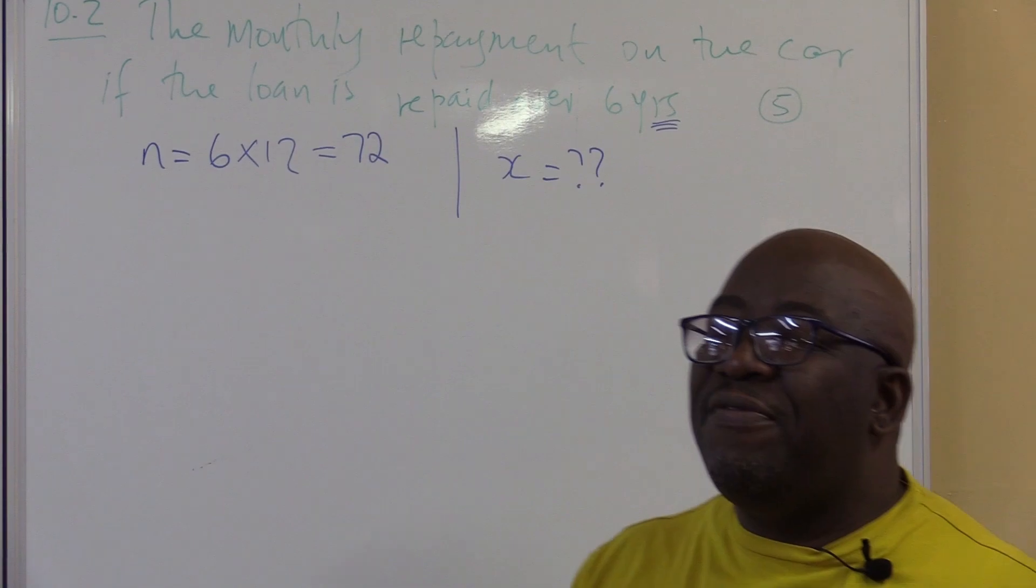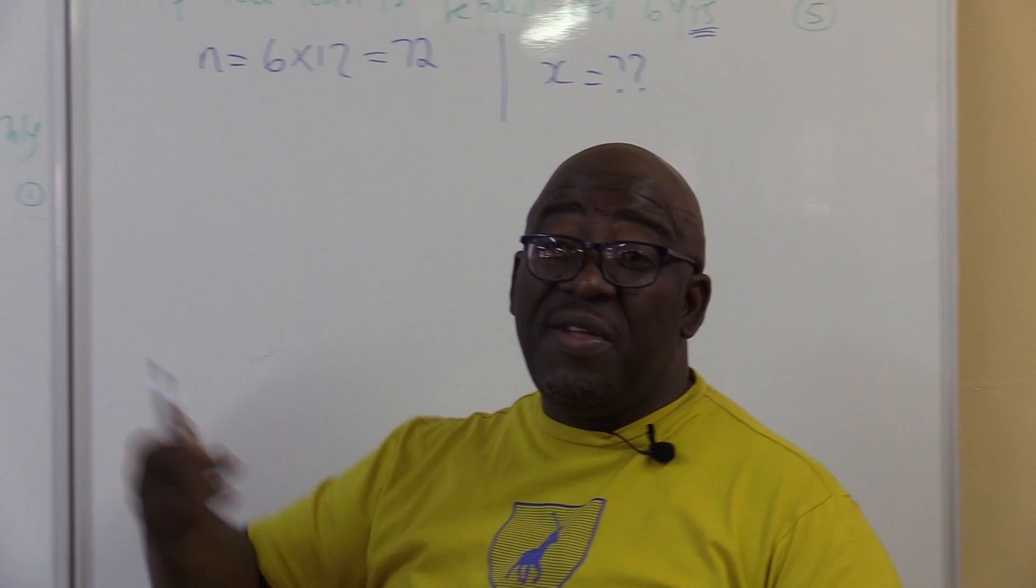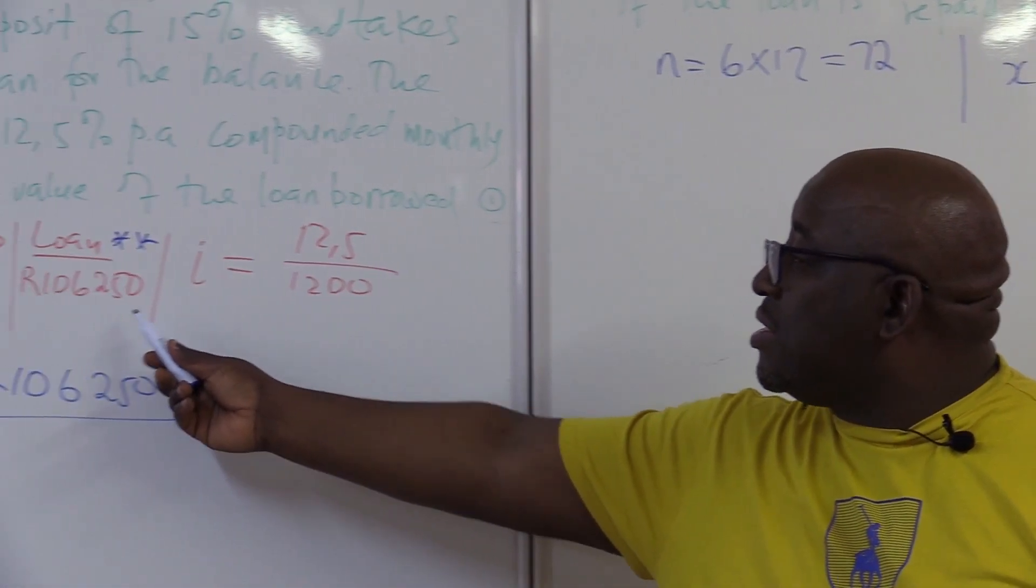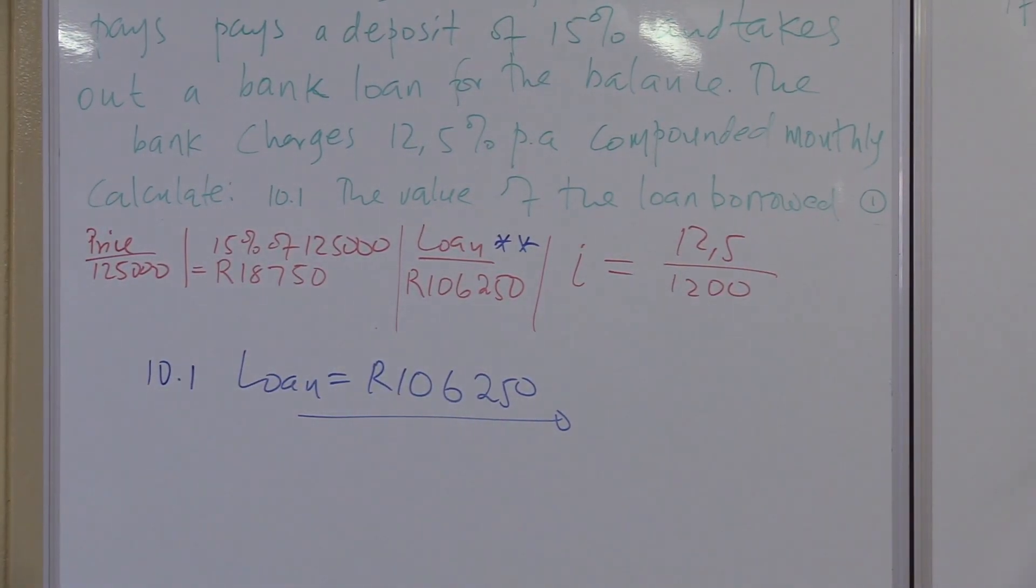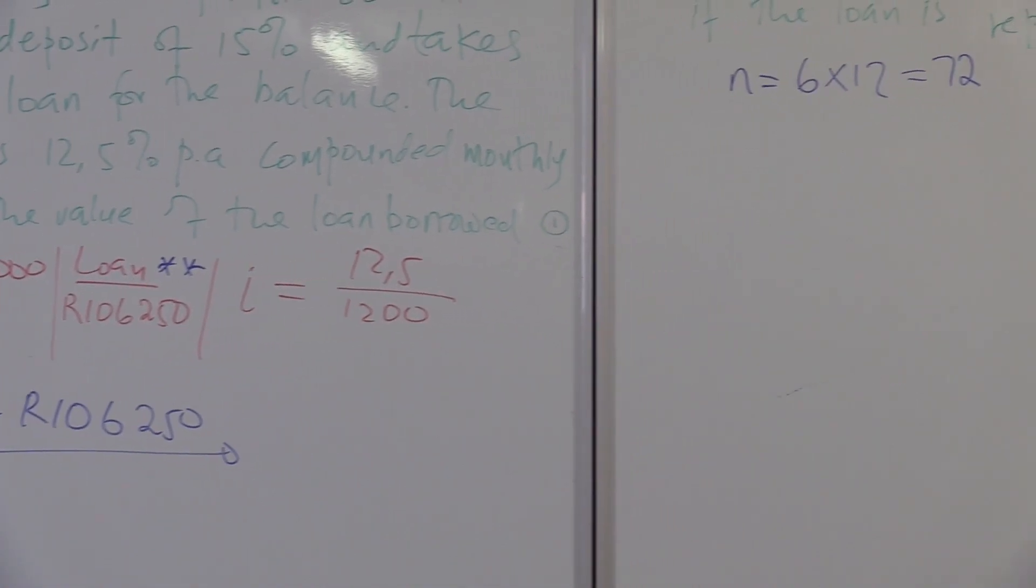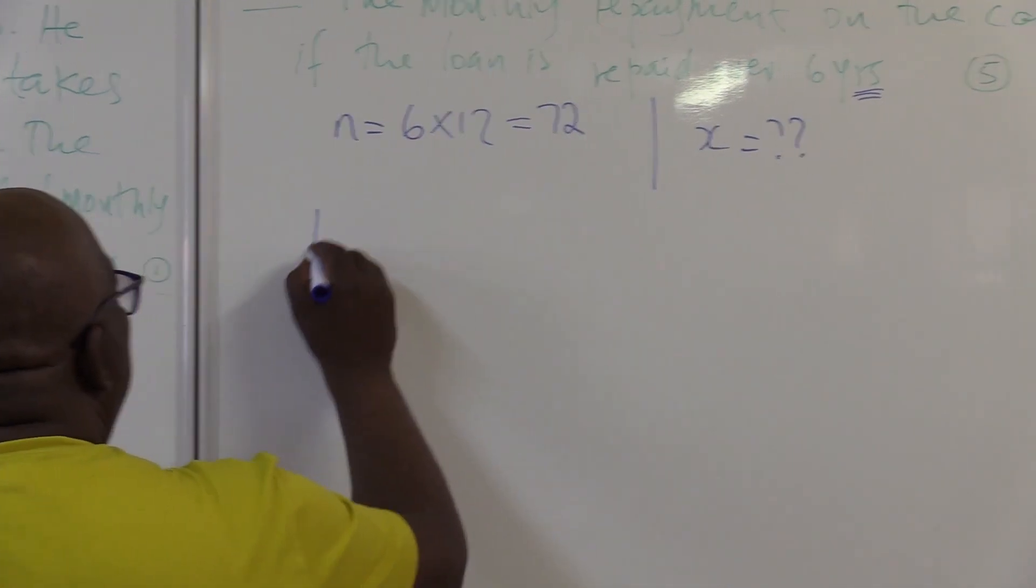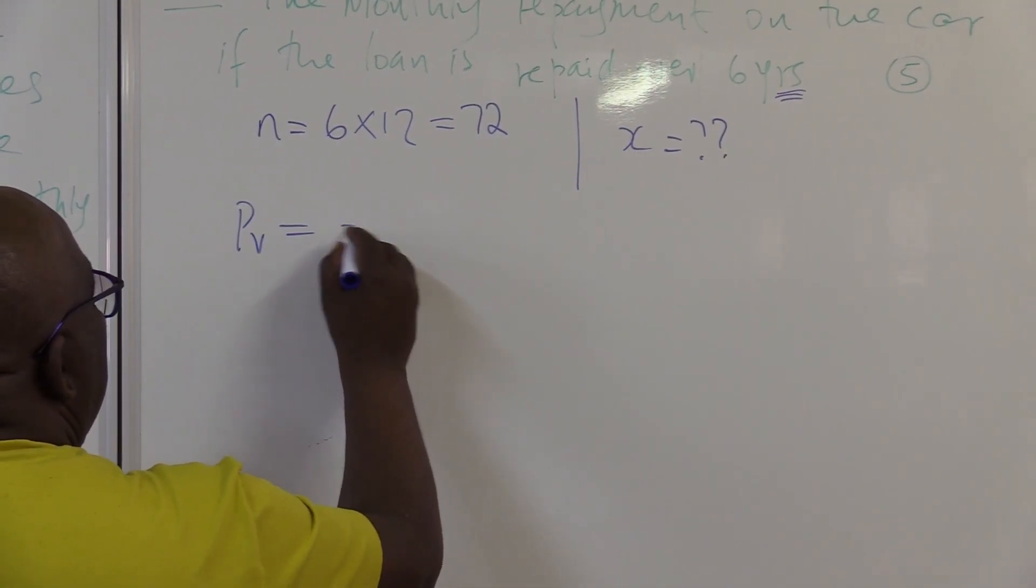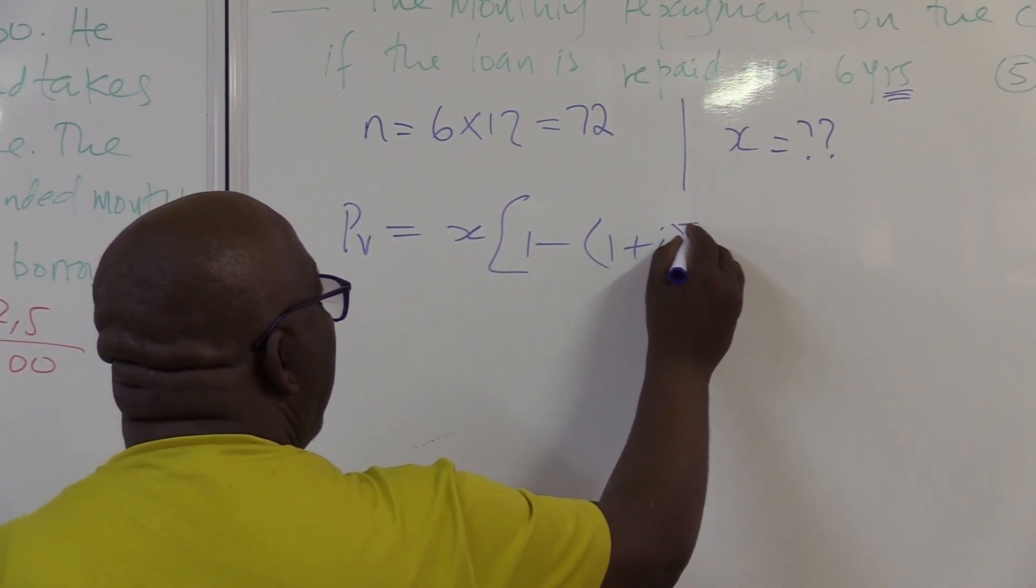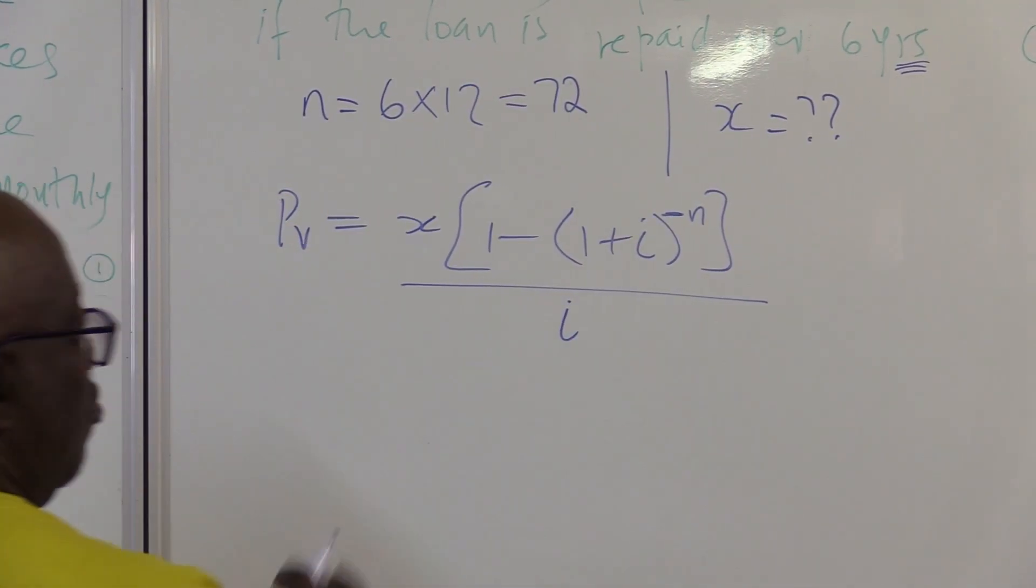Number one. Is this a future value or a present value? It is a present value because this guy is driving this car and he's paying it back. The loan that he took was this amount at this interest rate. He's going to be paying it for 72 months. How much will he be paying? Let's calculate that. We know that it is PV and the formula for PV is PV equals the installments into 1 minus into 1 plus I raised to the power minus N all over I. This is the formula to use.